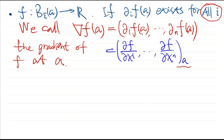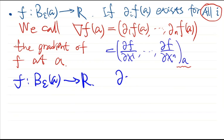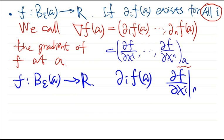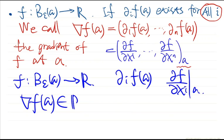This is simply a concept. We define the partial derivative — also denoted df/dxi — for a function defined near A. If the partial derivative exists for all i, we can construct the gradient, which is a vector in Rn with n coordinates.